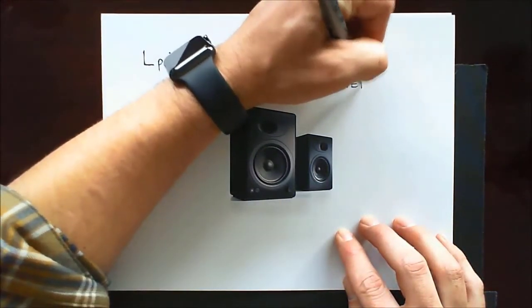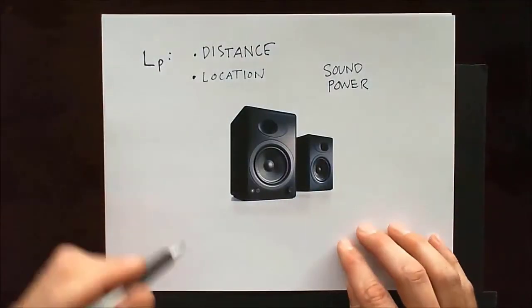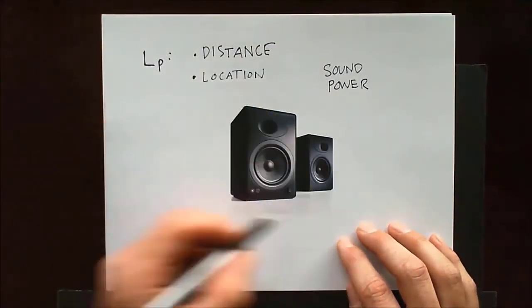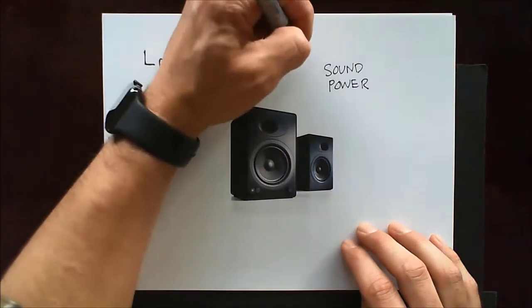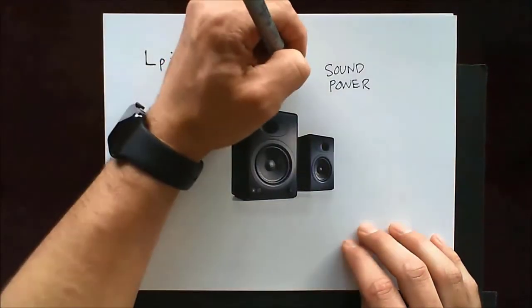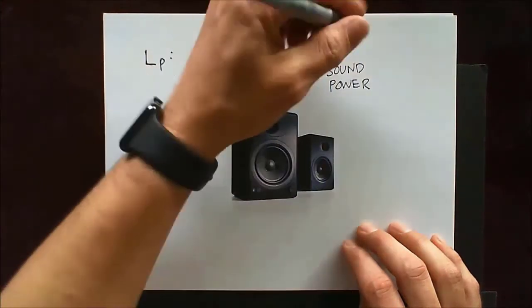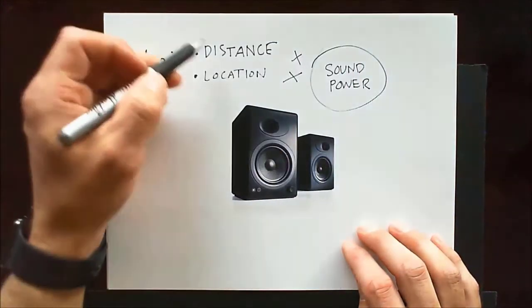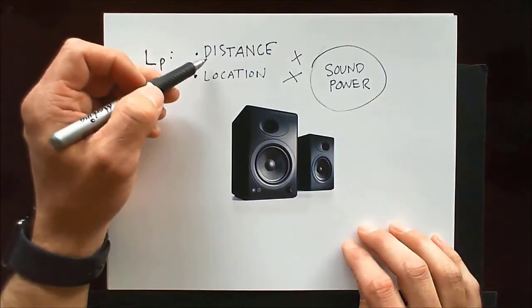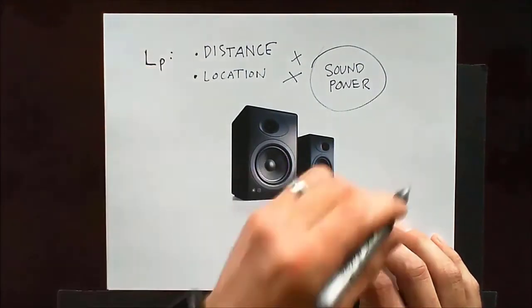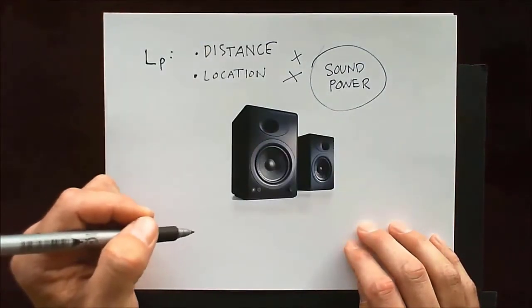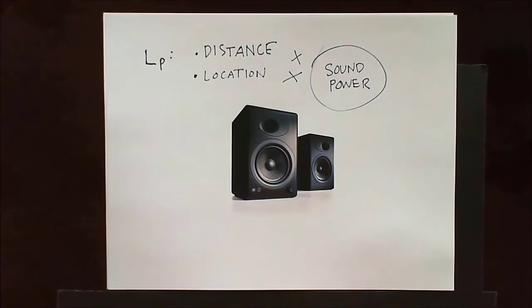Sound power is a method of quantifying how loud this sound source is without respect for how far away or where the measurements were taken. So this answer should be the same regardless of how far away the measurements were made or whether the microphones were in front behind and that sort of thing. So how does this work and how do we accomplish this?